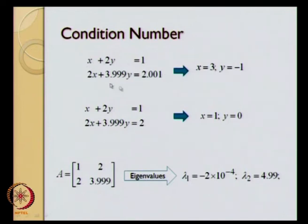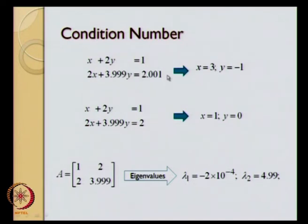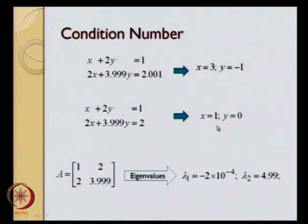For example, the first set of equations is x plus 2y equal to 1 and 2x plus 3.999y equal to 2.001, and the solution we get is x equal to 3, y equal to minus 1. But if the right-hand side instead of being 2.001 was just equal to 2, the only thing that has changed is that particular number, and we see that the solution changes drastically. So a very small change in one of these numbers is going to cause a very large change in the solution.